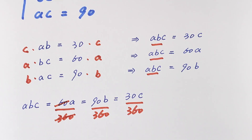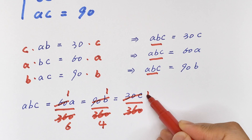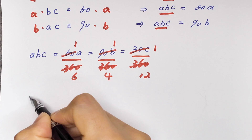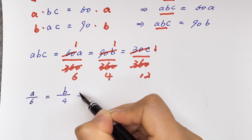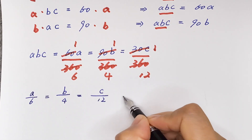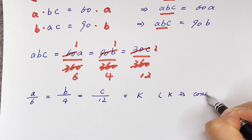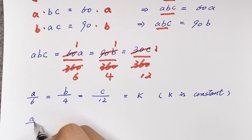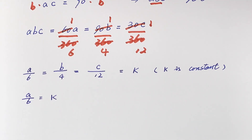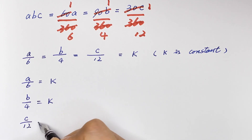After cancelling, dividing by 6, by 4, and by 12 respectively, it simplifies to a over 6 is equal to b over 4 is equal to c over 12. We set all of these equal to k, where k is a constant. So a over 6 = k, b over 4 = k, and c over 12 = k.